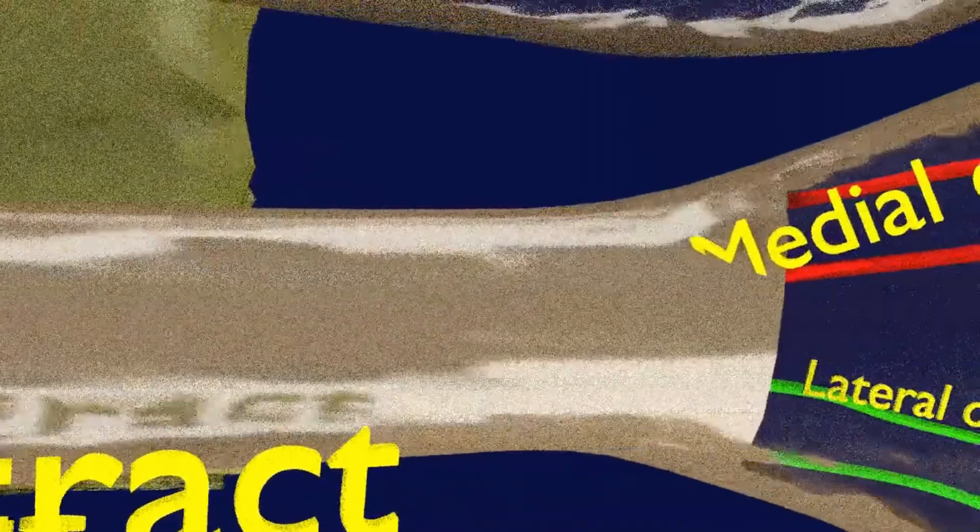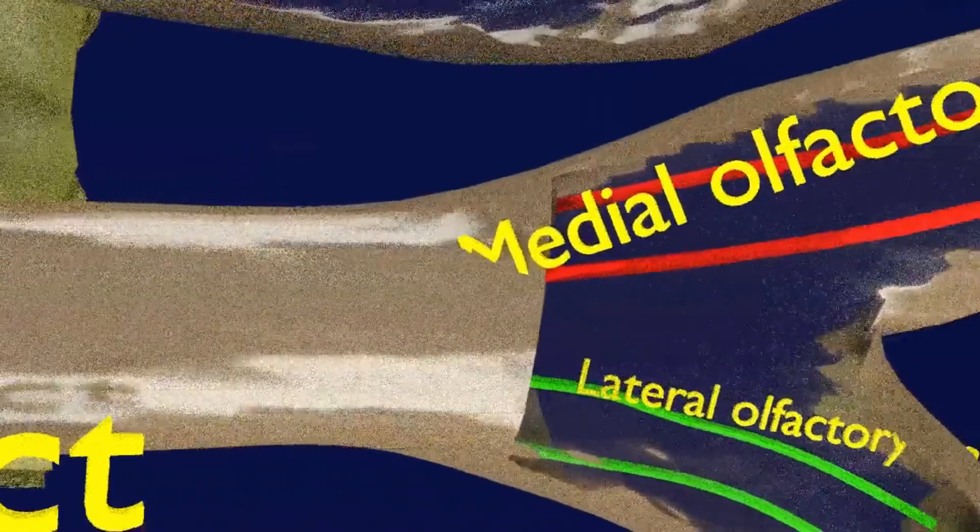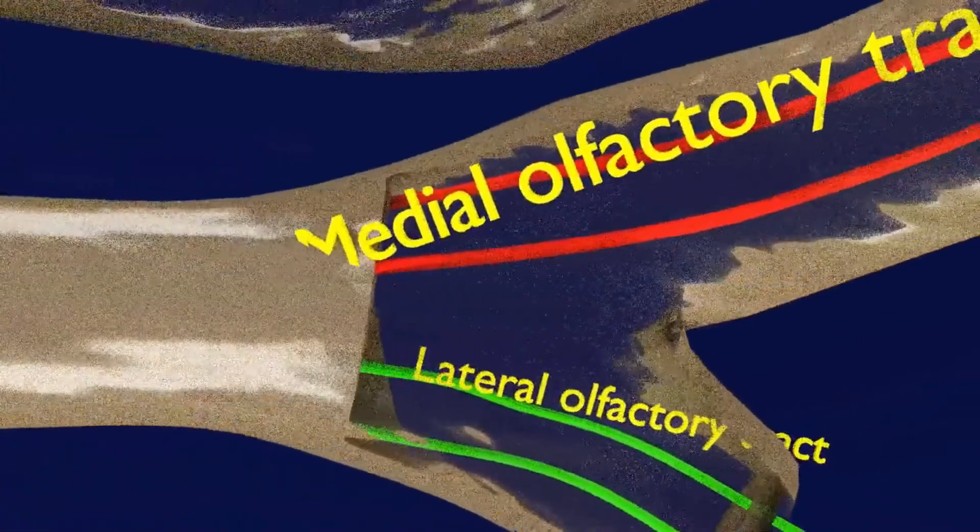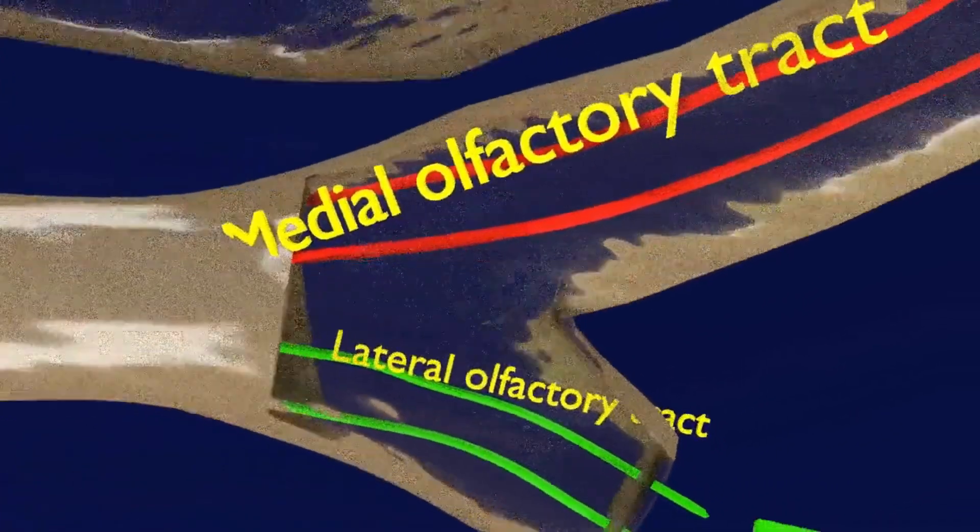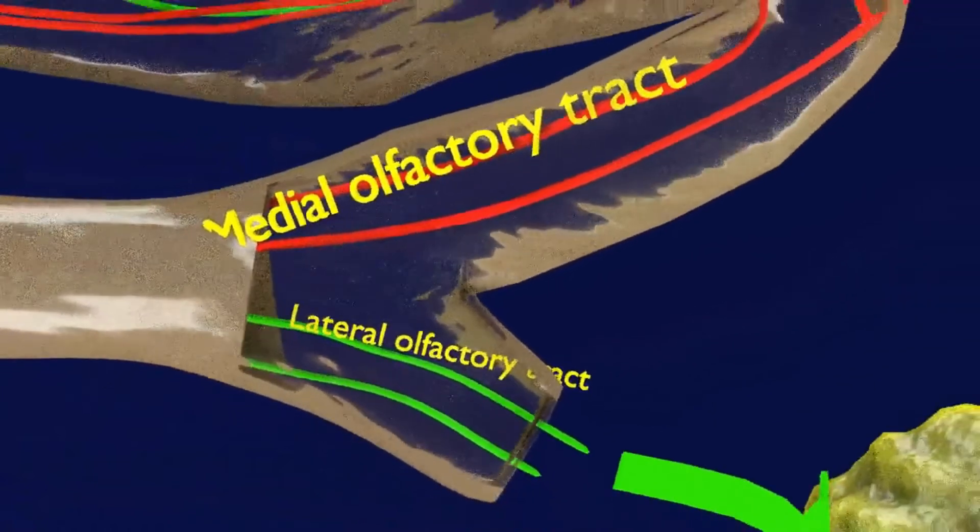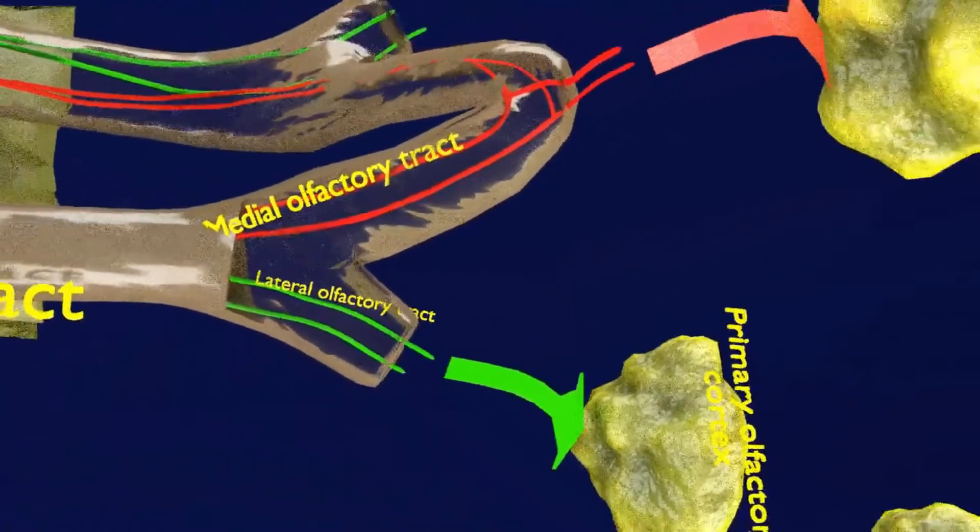On entering the brain, the tract divides into the medial olfactory tract, the fibers here are shown in red, and the lateral olfactory tract, the fibers here shown in green.